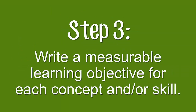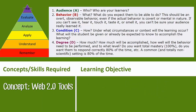Step 3: Write a measurable learning objective for each concept and/or skill. That means since I had four, I'm going to end up with four learning objectives for this one learning outcome. Things I'm keeping in mind are my Bloom's Taxonomy pyramid and also my ABCD format for objectives.